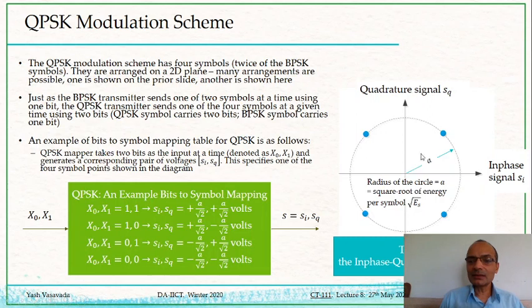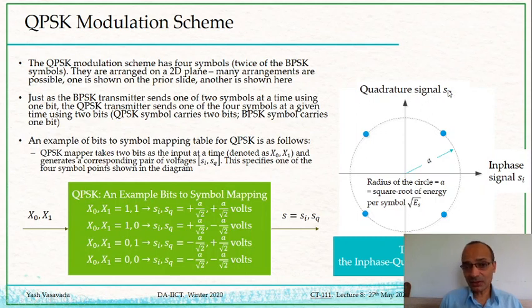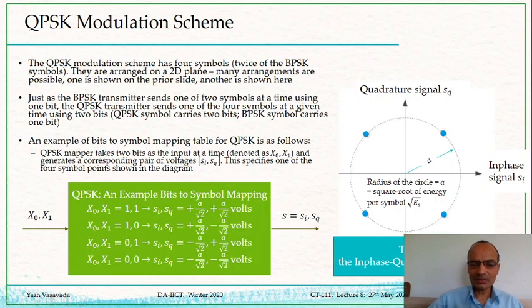You will notice that the symbol energy — the squared length of each constellation point — is the same no matter which symbol you send, because all four symbols lie on a circle centered at the origin of the 2D plane. That energy per symbol is A squared. This two-dimensional diagram has its x-axis called the in-phase signal (SI) and its y-axis called the quadrature signal (SQ). The voltage levels of SI and SQ are the coordinate descriptions of the four constellation points. This diagram is drawn on what is known as the in-phase/quadrature or IQ plane.